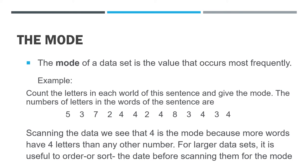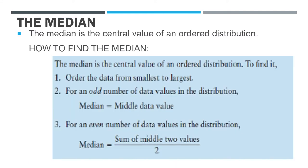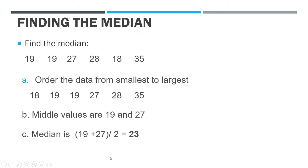The mode is the value that occurs most frequently in the data set. For example, in the data 5, 3, 7, 2, 4, 4, 2, 4, 8, 3 — number 4 is the mode because it's the most repeated. The median is the central value of an ordered distribution. To find it: order the data from smallest to largest. For an odd number of data values, the median is the middle data value. For an even number, sum the two middle values and divide by two. For example, ordering 19, 19, 27, 28, 18, 35 gives 18, 19, 19, 27, 28, 35, and the middle two values are 19 and 27, so the median is (19+27)/2 = 23.